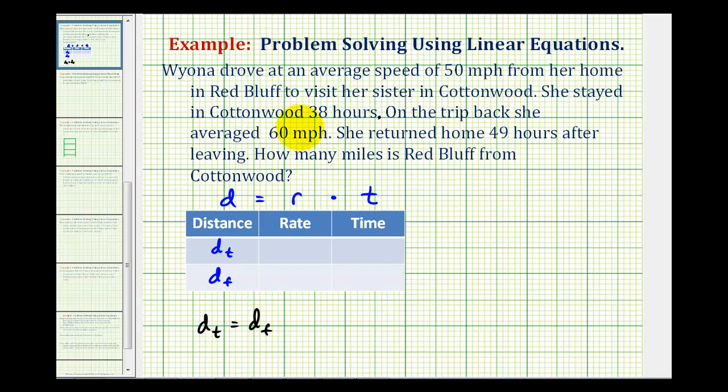Now see if we can figure out what the total driving time would be. Notice how she stayed in Cottonwood for 38 hours and then she returned home 49 hours after leaving. So 49 hours minus 38 hours would be the total driving time. 49 minus 38 equals 11. So the total driving time was 11 hours.